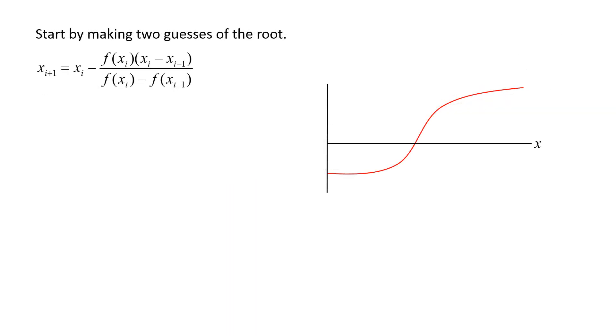When using the secant method, you start by making two guesses of the root, x1 and x2. Evaluate the function at those root estimates, and use this information to calculate the next root estimate, x3, which is where the secant line passing through x1 and x2 crosses the x-axis.